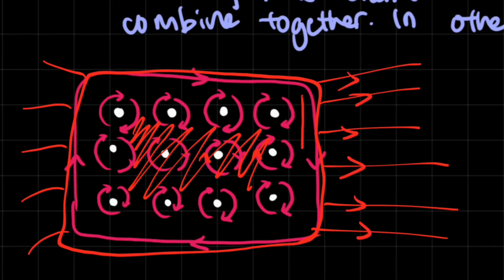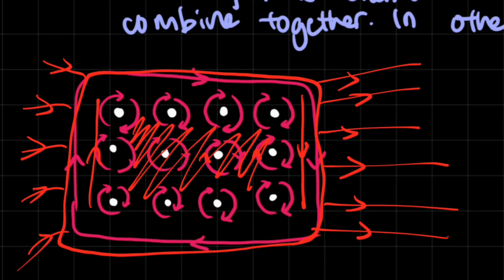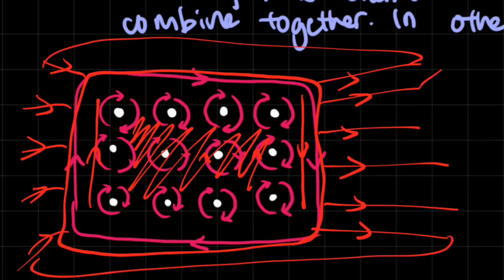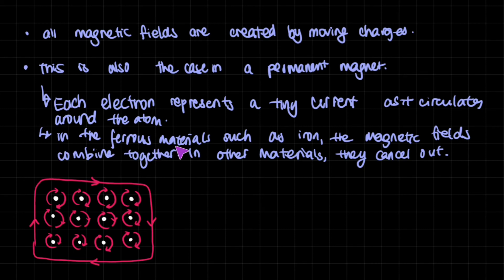This surface current flowing around the material creates a magnetic field 90 degrees to it, which is why we get the characteristic field pattern of a magnet. In ferrous materials such as iron, the magnetic fields of individual atoms combine together. In other materials, like wood, they cancel out because the electrons move in scattered, random directions. This is why magnetic materials are so special.